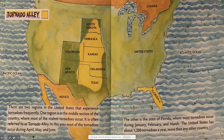Tornado Alley. There are two regions in the United States that experience tornadoes frequently. One region is in the middle section of the country, where most of the violent tornadoes occur. It is often referred to as Tornado Alley. In this area, most of the tornadoes occur during April, May, and June. The other is the state of Florida, where most tornadoes occur during January, February, and March. The United States has about 1,200 tornadoes a year, more than any other country.